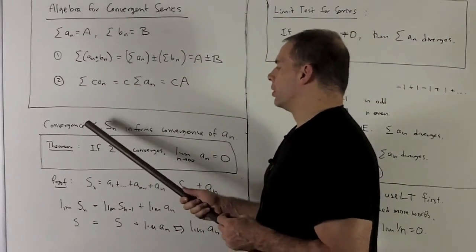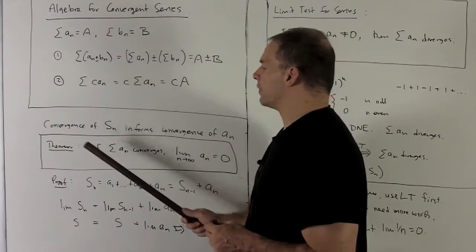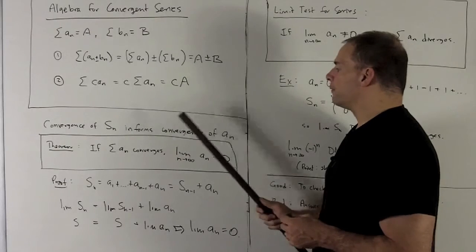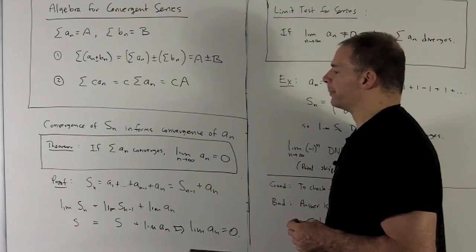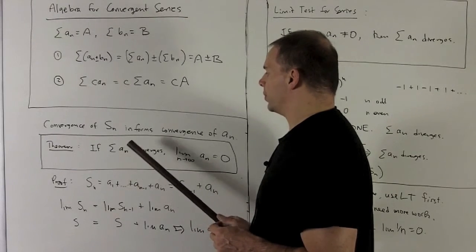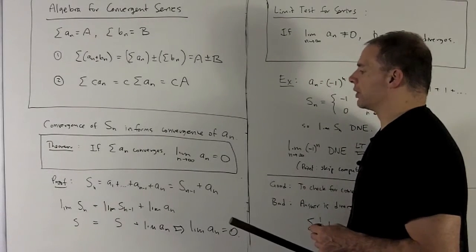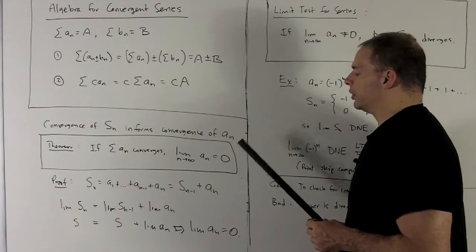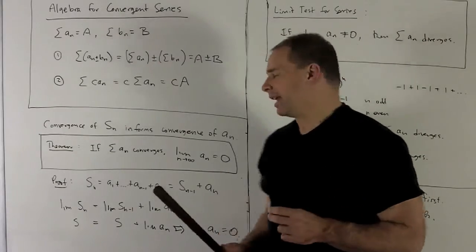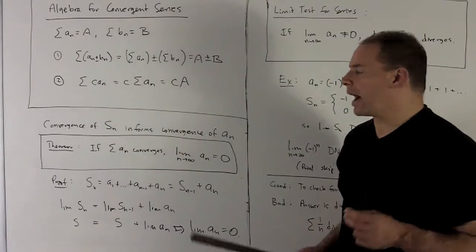Final result: when a sum exists — when your series converges — the convergence as a limit of s sub n, the partial sums, is going to inform the convergence of your original sequence a sub n. Our theorem: if the series associated to the sequence a sub n converges, then the limit as n goes to infinity of a sub n has to be equal to zero. It'll be useful when we turn this around — the one thing that can break convergence for a series is if the limit winds up not being equal to zero.